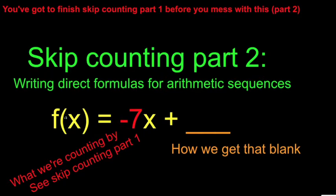This week we're going to look at the second piece. How do we figure out this blank? How do we figure out what to put in that blank so that we can actually complete the formula and use it? The assumption is that you already know how to get this negative 7, the number that we're counting by.